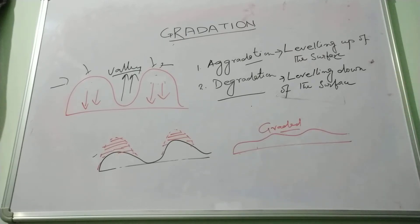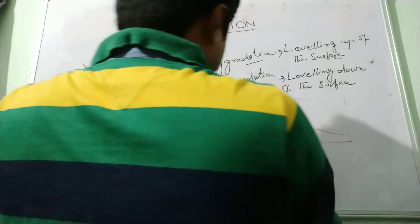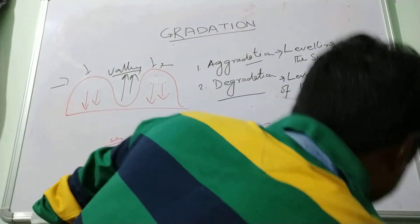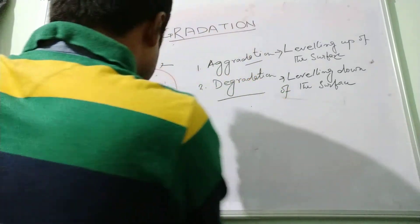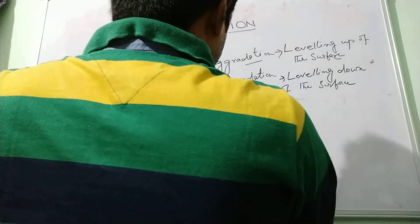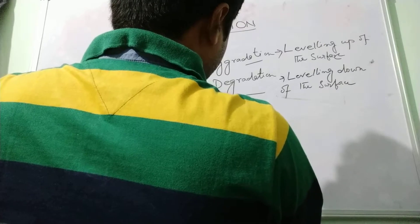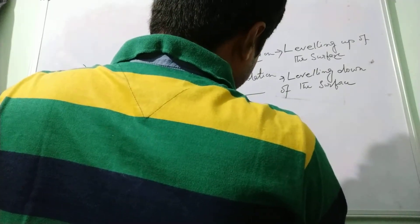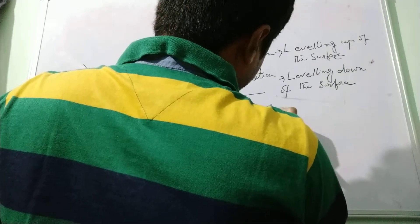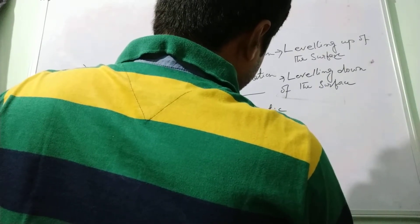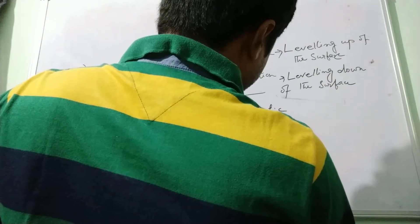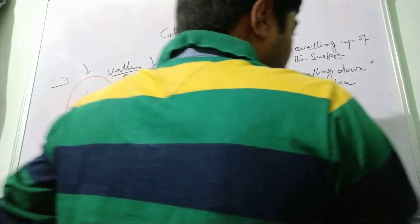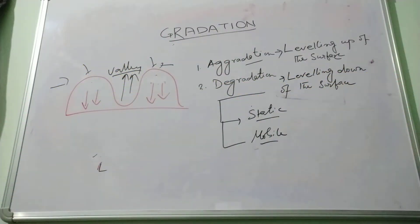So in degradation, this part is divided into two more important categories. One, this process is called static, and the other is mobile. These two processes help in this degradation process.